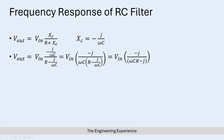Next, bringing this section of the equation down, we have minus J on top and on the bottom we have omega CR minus J over omega C. If we multiply through, the omega C terms cancel, and we're left with the simplified form. The resulting equation is V_out equal to V_in multiplied by minus J over (omega CR minus J).